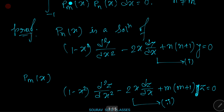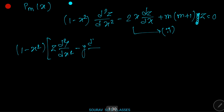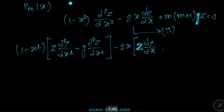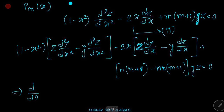Now multiplying equation one and two by z and y respectively and subtracting, we get: (1 minus x squared) times [z d²y/dx² minus y d²z/dx²] minus 2x[z dy/dx minus y dz/dx] plus [n(n+1) minus m(m+1)] yz equals zero.